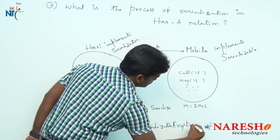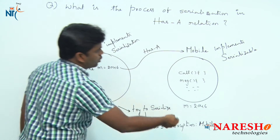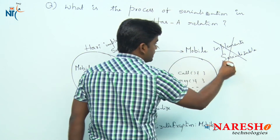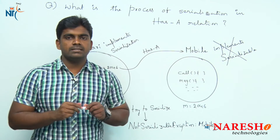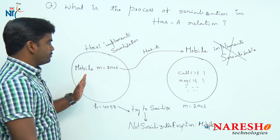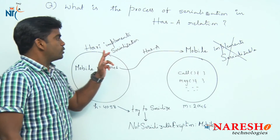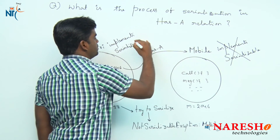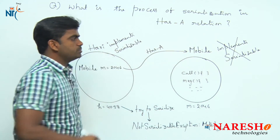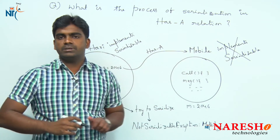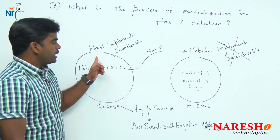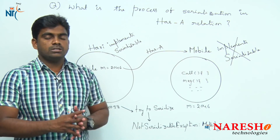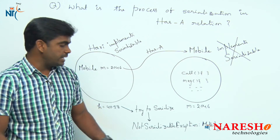The issue is that the mobile class is not implementing Serializable. So two objects exist and there is a has-a relation between the first and second object. But only the first object is implementing Serializable interface, and the second object is not. In that situation you cannot serialize the first object — the Harry object — and you will get a NotSerializableException for Mobile.